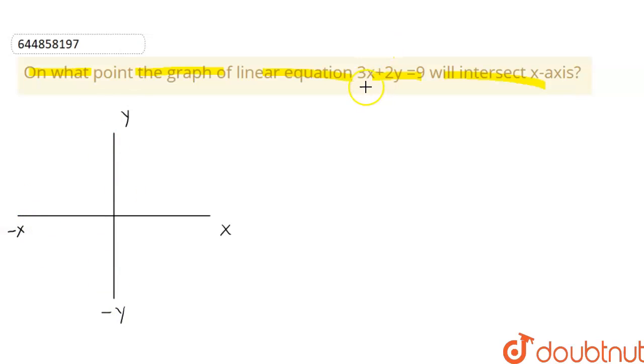Now we have been given that equation of line that is 3x + 2y = 9 intersects x-axis. Let us suppose this intersects x-axis like this. At this point, we need to find this point. So it is given that this is 3x + 2y = 9. It intersects at this point.